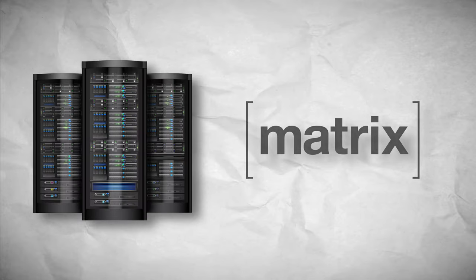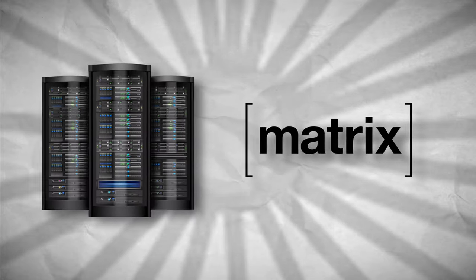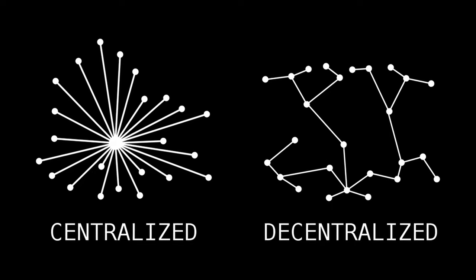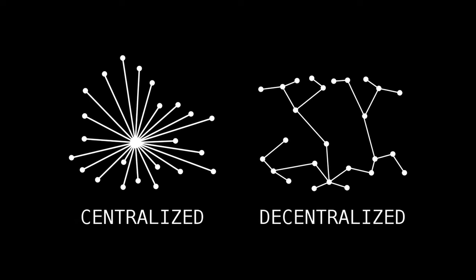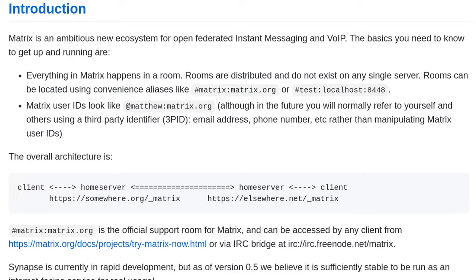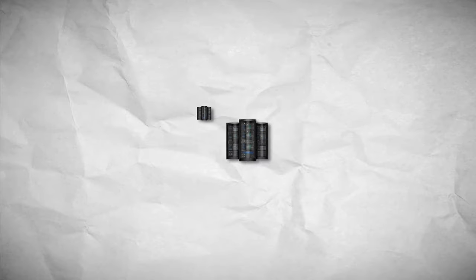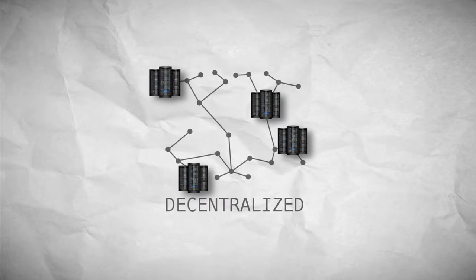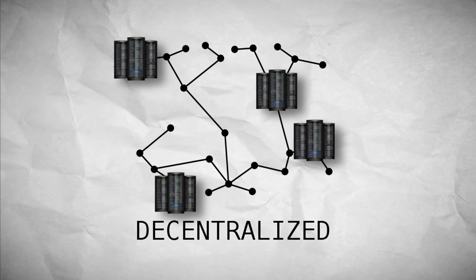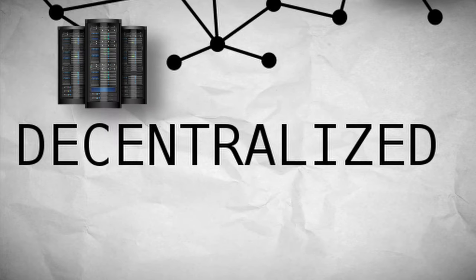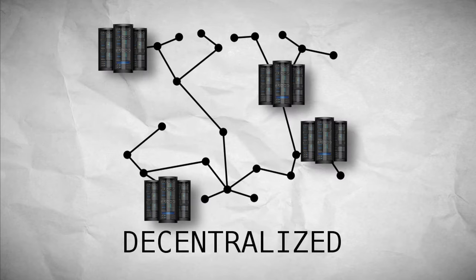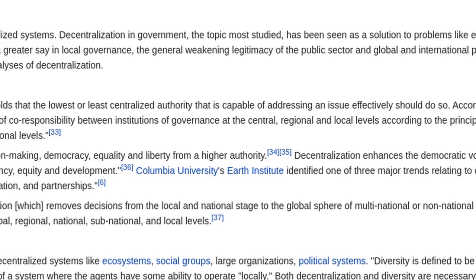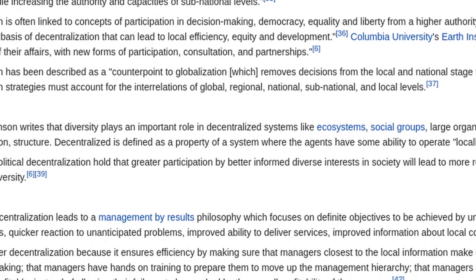However, by installing the Matrix server software on your server, you're basically limiting yourself to whoever wants to join your server. And that's where the best feature of Matrix comes into play: the Federation. Different Matrix servers hosted by different people are able to talk to each other and exchange messages, calls, and literally everything with each other as if it was one giant server. This decentralized but still connected system is a very good way of ensuring people have personal freedom but aren't completely detached from the rest of the world.